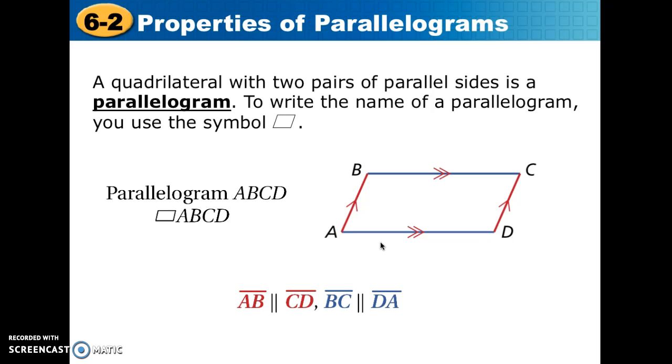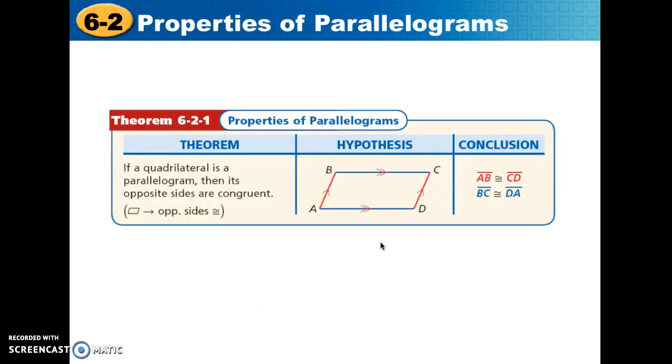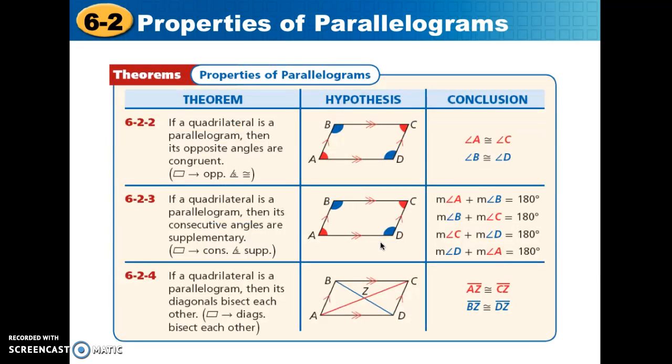Notice that in the diagram, we have two sets of parallel sides. Segment AB is parallel to segment CD, segment BC on the top is parallel to segment DA on the bottom. Now we have theorem 6-2-1 that says if a quadrilateral is a parallelogram, then its opposite sides are congruent. So this is saying that AB is congruent to CD, and segment BC is congruent to segment AD. So that's one of the conditions or properties of a parallelogram.